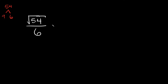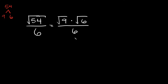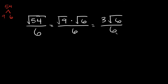So we can do the exact same thing over here. The square root of 54 we can break down into the square root of 9 times the square root of 6, and then that's going to go over 6 in our denominator.